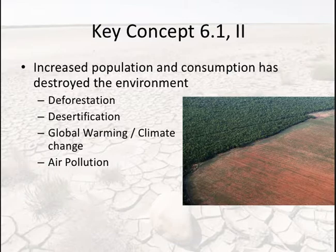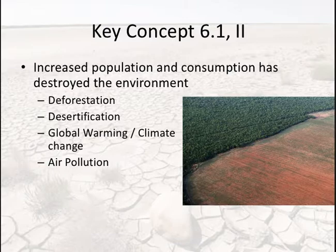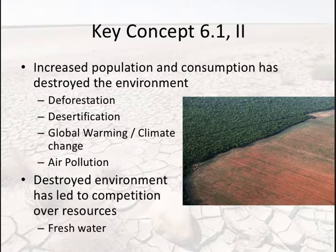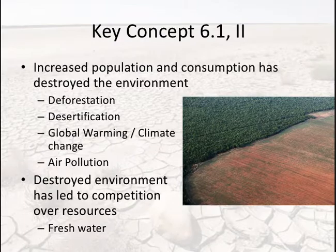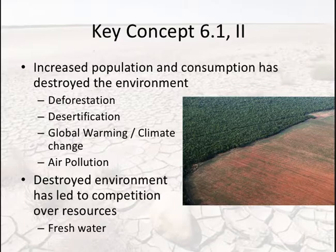Through pollution you also see the onset of global warming and climate change — the College Board treats that as real, and it is. Air pollution has changed vital resources people need to live, like oxygen. This destroyed environment has also led to competition over resources, best exemplified by freshwater crises, especially in Africa. But this isn't reserved only for the developing world — Flint, Michigan in the USA had its own freshwater crisis.